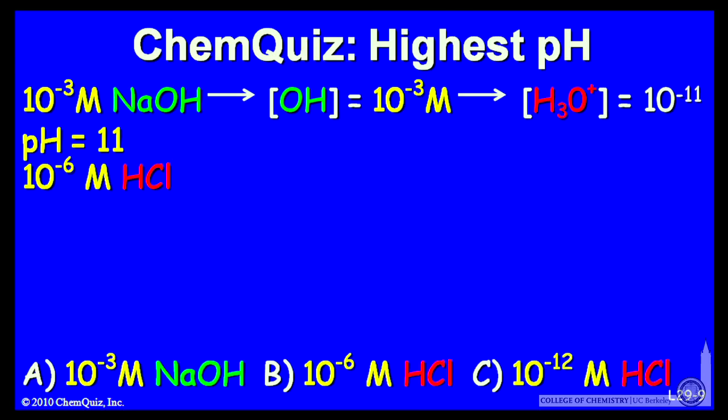We have 10 to the minus 6 molar HCl. HCl, a strong acid, completely dissociates, donating its proton to water. So I'll form 10 to the minus 6 molar H3O plus. 10 to the minus 6 molar H3O plus gives me a pH of 6.